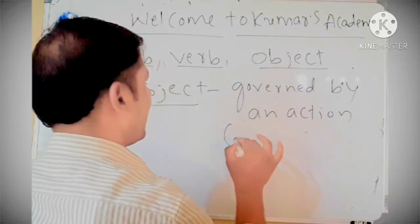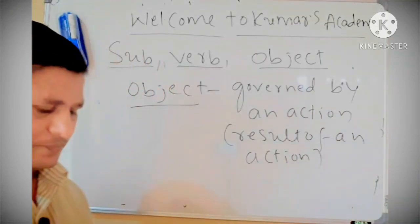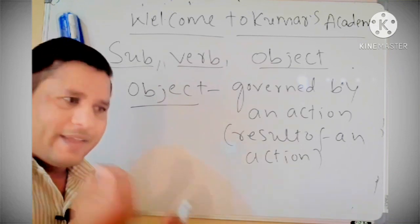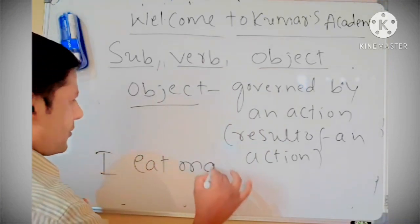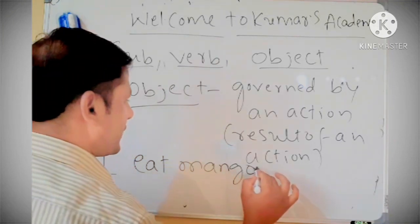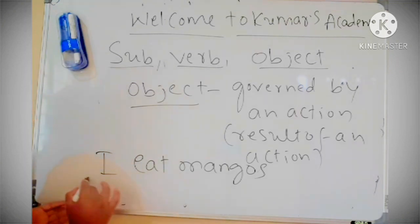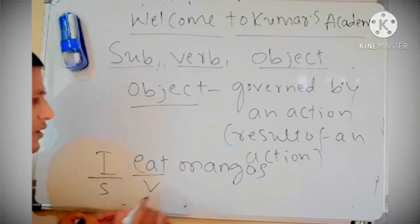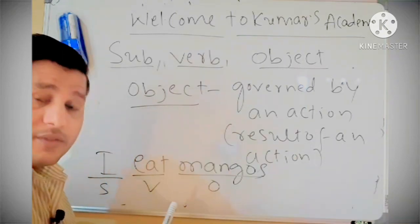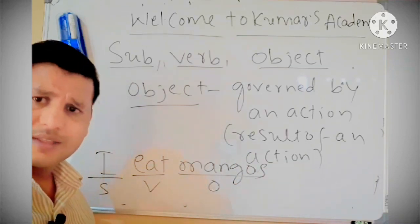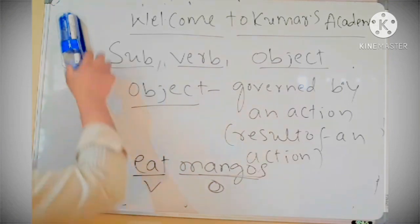What is object? Object is nothing — it is governed by an action. It is the result of an action. For example: I eat mangoes. This is a sentence. I is a subject, eat is a verb, mangoes is an object. Why object? Because when the action is done — eating is an action — the result itself, the word or object, either a noun or pronoun, when the result comes out, that result is called the object.